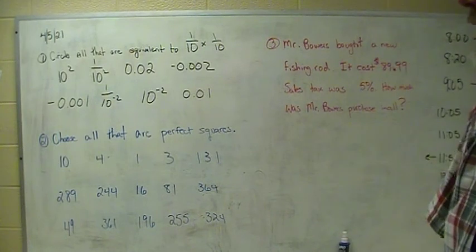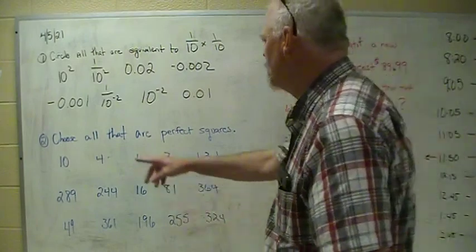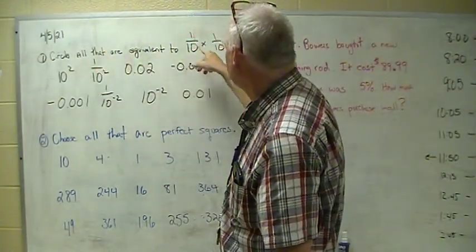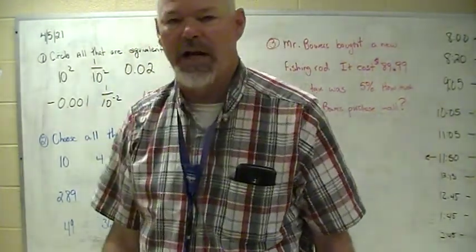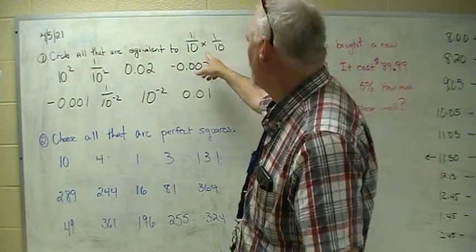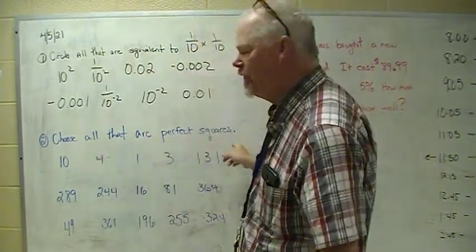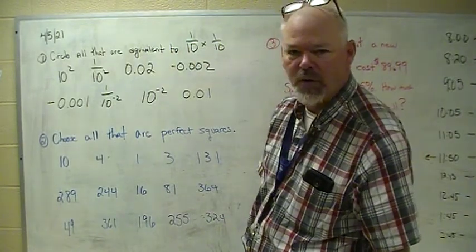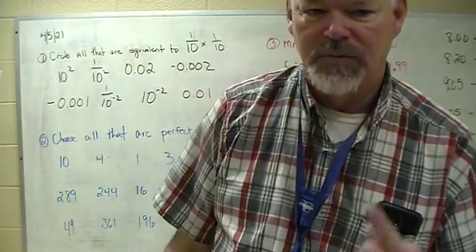All right, you should know all these answers. First one says circle all that are equivalent to 1/10 times 1/10. Remember, beginning of the year all we did was learn how to write numbers a different way. Number two says choose all that are perfect squares. Remember, one times one - I'm giving away an answer there - one would be a perfect square, two times two, four would be a perfect square.